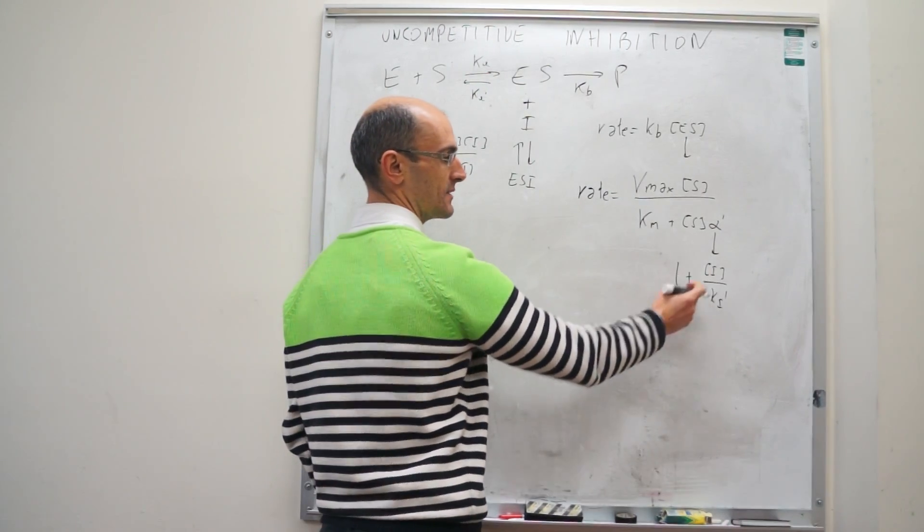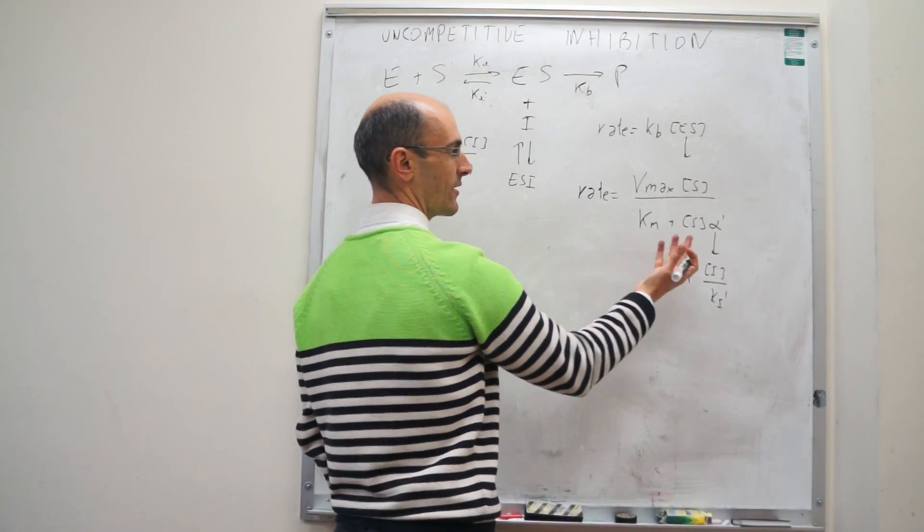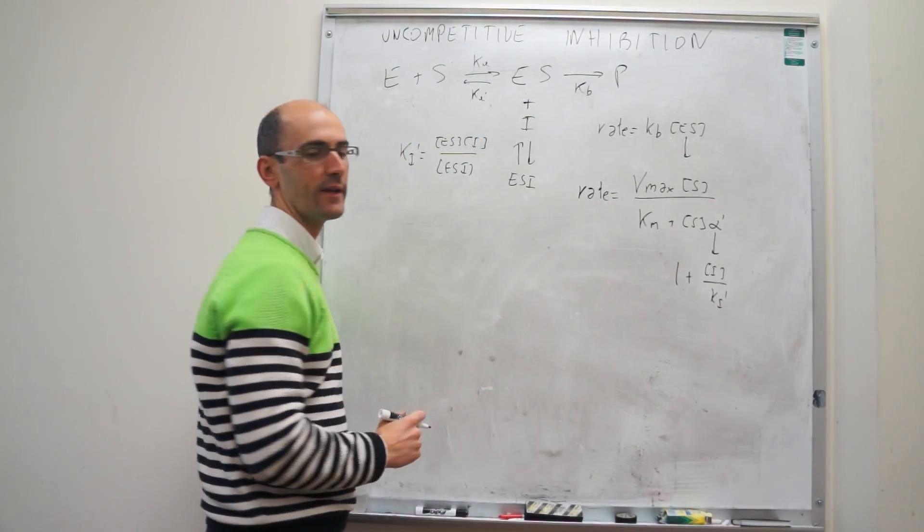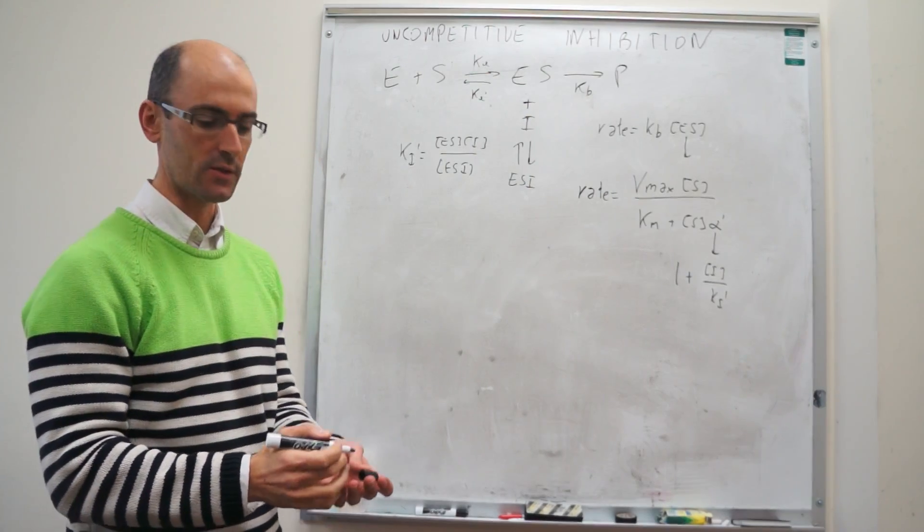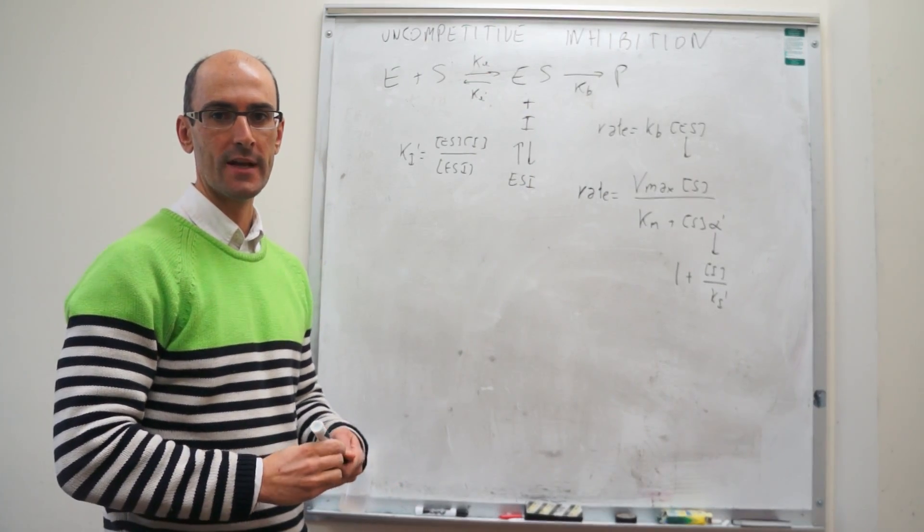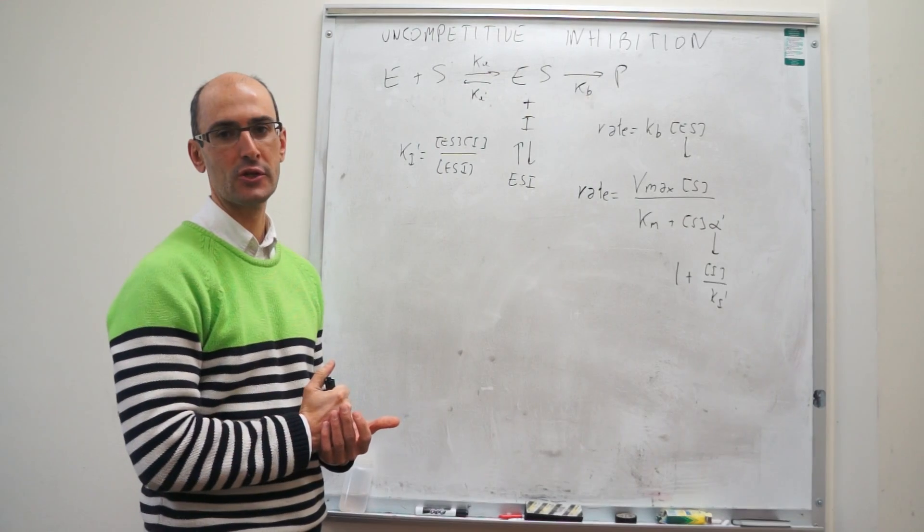But as soon as this is larger than zero, then all of this denominator is larger than it was before, and then the rate goes down, which is what is going to modulate the reactivity of that enzyme catalyzed reaction.